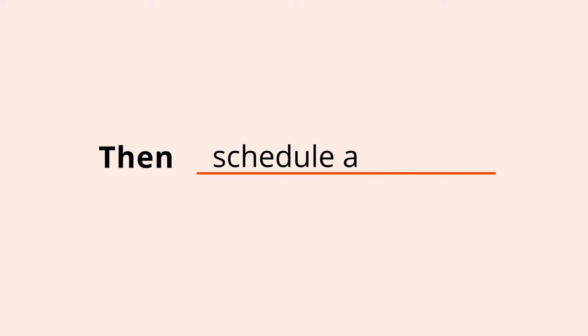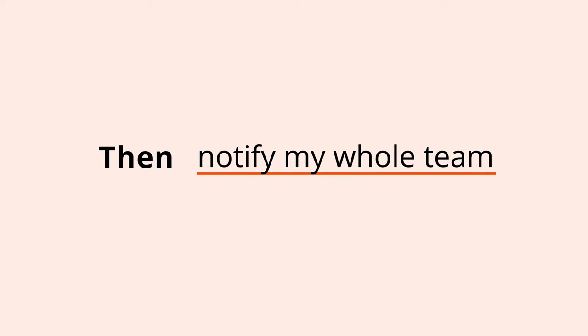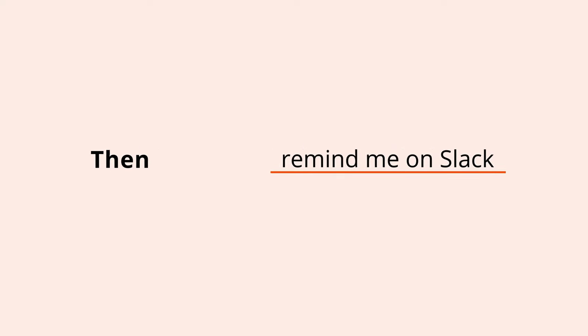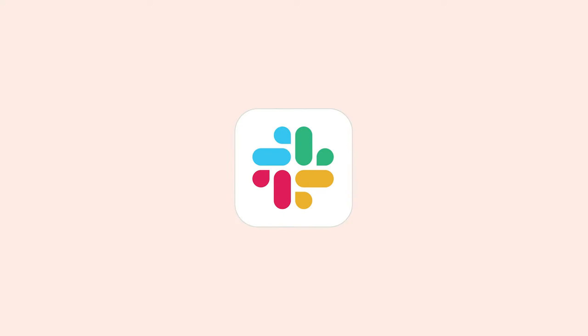An action is a task that a Zap performs after it's triggered. So while the trigger tells a Zap when to do something, the action is what the Zap actually does. And a Zap can have as many actions as you need.